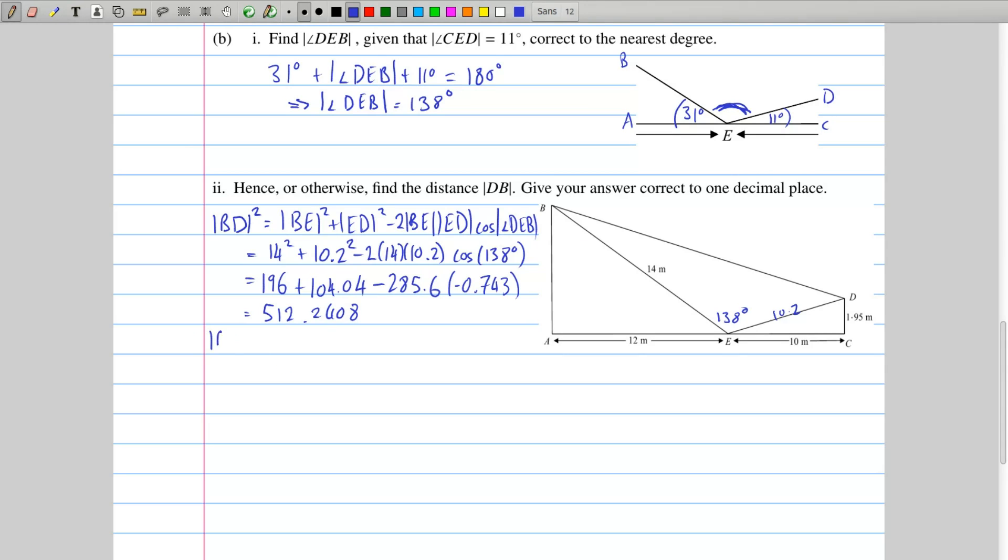That's BD squared, so we need to get BD as well. You just need to square root that answer, and you end up with 22.6 meters correct to one decimal place.